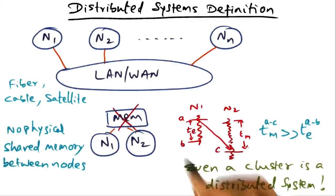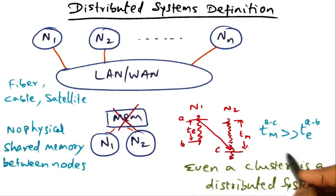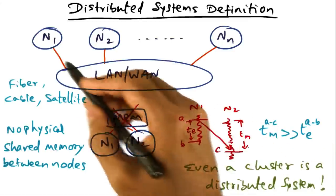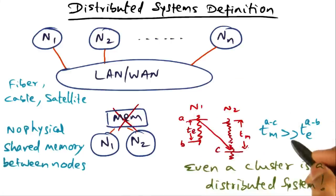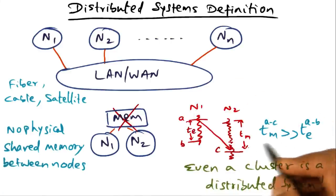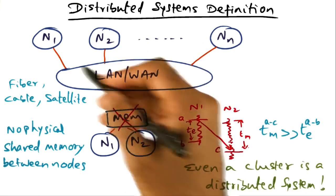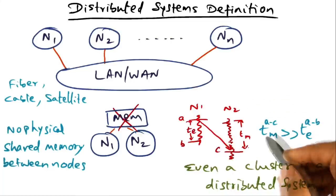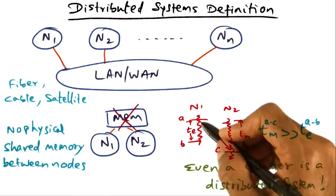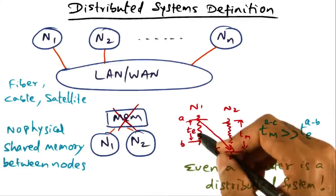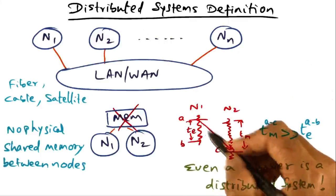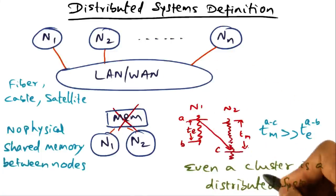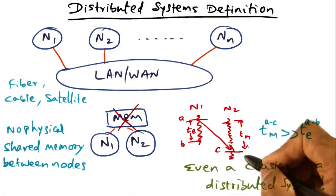Even a cluster is a distributed system by this definition. The importance of this inequality is in the design of algorithms that span the nodes of the network. Because the message transmission time is so significantly larger than the event computation time on a single node, in structuring applications that run on distributed nodes, one has to be very careful to ensure that computation time in the algorithms is significantly more than the communication time. Otherwise, we are not going to reap the benefits of parallelism if most of the time is spent communicating.